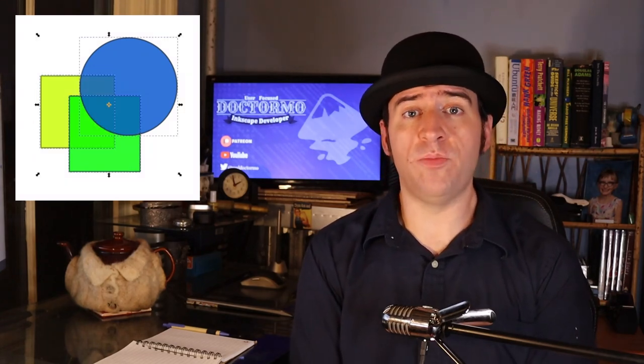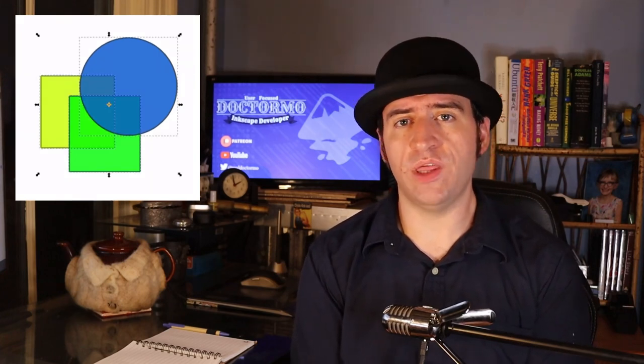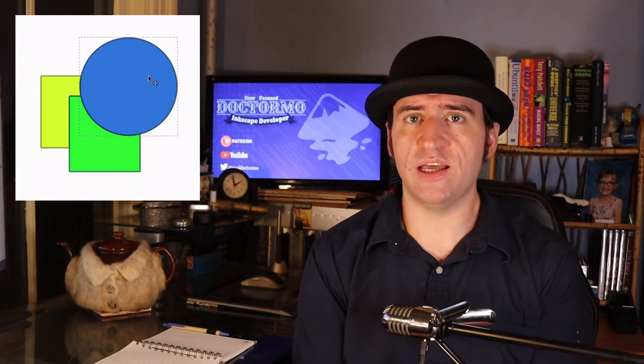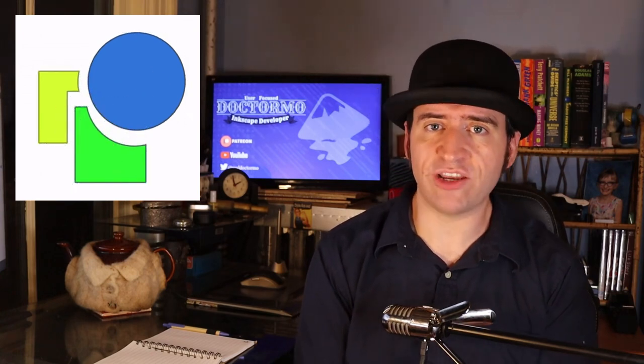Firstly, the Shape Builder tool — it is actually called the Shape Builder tool now, thank you to everybody that answered that poll. This is a piece of code by Osama, a Google Summer of Code project, which unfortunately wasn't completed. Part of the problem is that Inkscape's code base keeps changing — we keep refactoring it, keep trying to make it better. And Osama's code ended up being left behind.